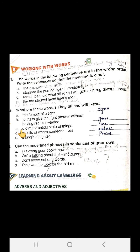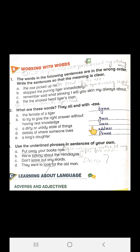C is: a dirty or untidy state of things. What do we call it? Mess. The fourth is: details of where someone lives. What do we call it? Address. And the last is: a king's daughter. Princess. You see, all the words meet the criteria being asked in the question.